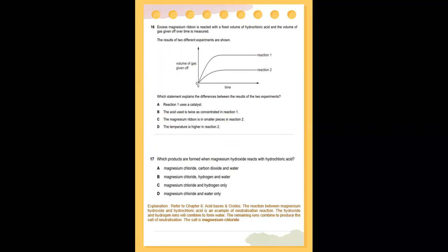Excess magnesium ribbon is reacted with a fixed volume of hydrochloric acid and the volume of gas given off over time is measured. The results of two different experiments are shown: reaction one shows a greater volume of gas given off, compared to reaction two where the volume is lesser. Which statement explains the difference? The answer is that reaction one uses a catalyst — you can see reaction one is faster and the gas released is higher, so it must use a catalyst.